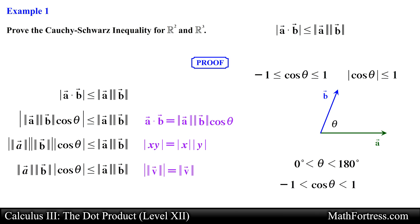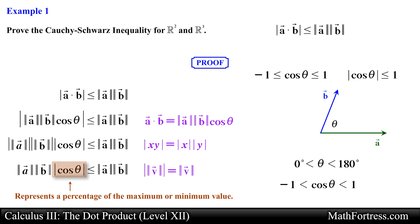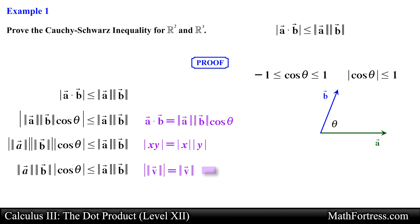In essence, the value of cosine of theta between 0 and pi represents a percentage of the maximum or minimum value, which is equal to the magnitude of vector A times the magnitude of vector B. So this inequality is justified, and this ends the proof.